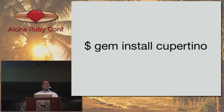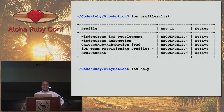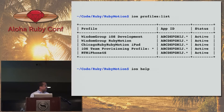Cupertino is a gem. Have you ever dealt with provisioning profiles with iOS? It's a pain in the neck. If you gem install Cupertino, you can handle your provisioning profiles from the command line. In this case I'm taking a look at the iOS profiles on my local machine — the app IDs shown are not actual, I changed those.